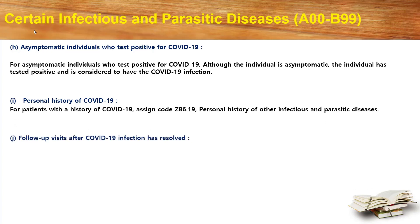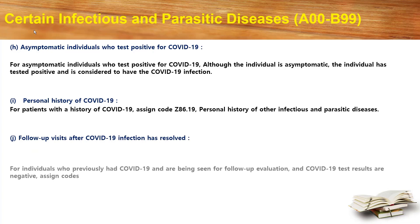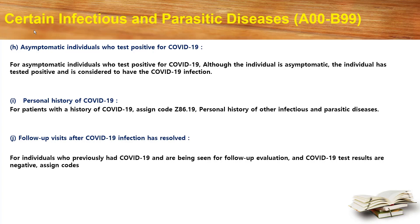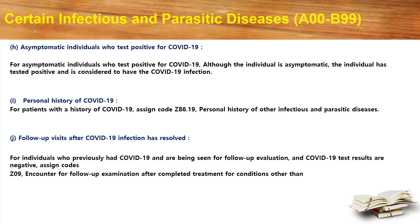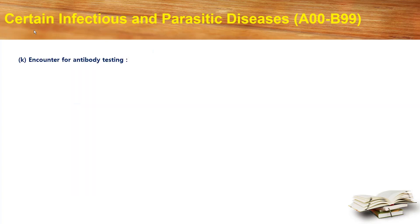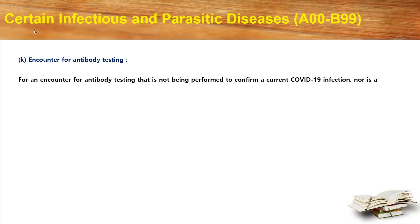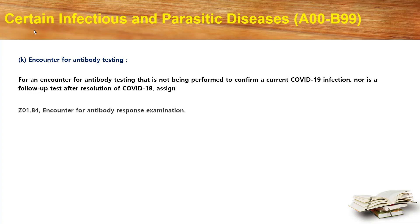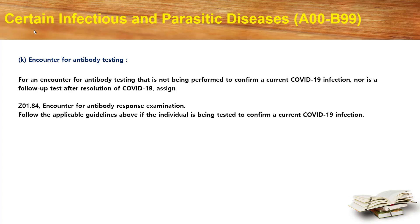For a follow-up visit after COVID-19 infection has resolved: for individuals who previously had COVID-19 and are being seen for follow-up evaluation and COVID-19 results are negative, assign code Z09, that is encounter for follow-up examination after completed treatment for conditions other than neoplasm, and Z86.19, personal history of other infectious and parasitic diseases. For an encounter for antibody testing not being performed to confirm a current COVID-19 infection nor as a follow-up test for resolution of COVID-19, assign Z01.84, that is encounter for antibody response examination. Follow applicable guidelines if the individual is being tested to confirm a current COVID-19 infection.